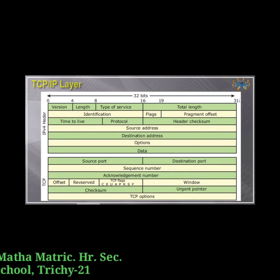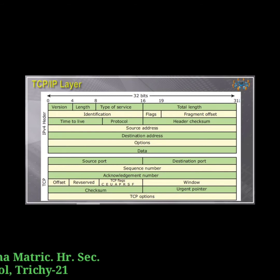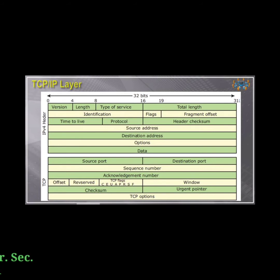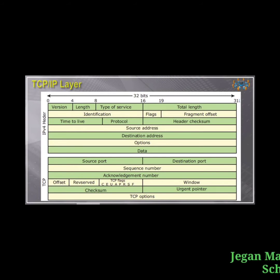TCP/IP is a combination of two protocols: TCP and IP. The Internet Protocol specifies the logistics of packets sent over networks — where they have to go and how to get there. The Transmission Control Protocol is accountable for guaranteeing the trustworthy transmission of data and checks if any packet is not transmitted and resubmits it.